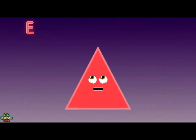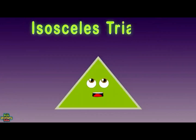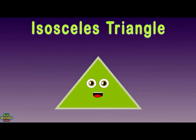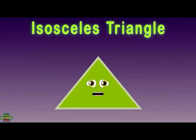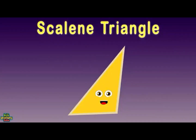I'm an equilateral triangle, but what does that mean? All three of my sides have the same length. I'm an isosceles triangle — I'm a triangle with two sides the same length. I'm a scalene triangle and I'm a tough one to hide. I'm a triangle that has no equal sides.